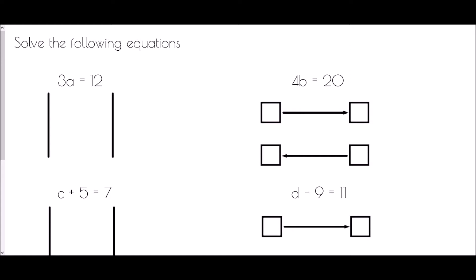The first method is the balancing method. For 3A equals 12, I've drawn two straight lines to keep the working out neat and to show what I've done as I go through. Now, 3A means 3 times A — if we ever see a number right next to a letter it means they are being multiplied. We use inverse operations, so since this is 3 times A, I divide both sides by 3. 3A divided by 3 leaves just A, and 12 divided by 3 is 4. So A equals 4.